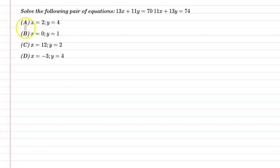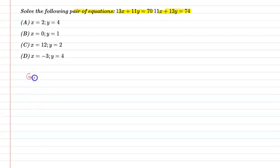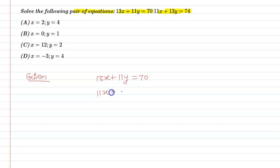Hello students, let us understand the following question. The question says: solve the following pair of equations. Given: 13x + 11y = 70 and 11x + 13y = 74.